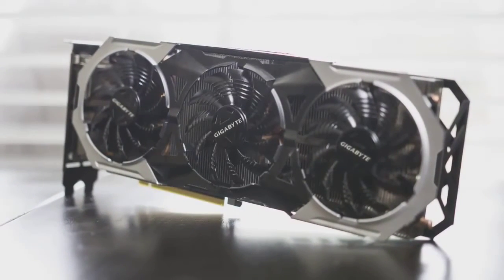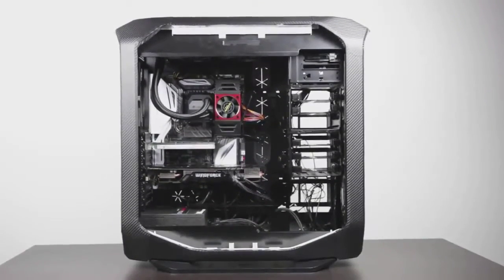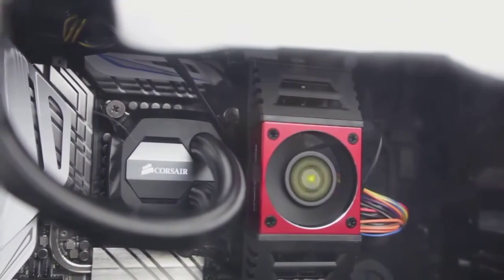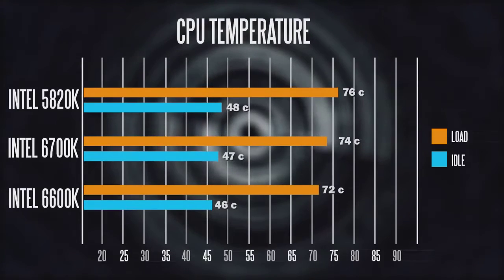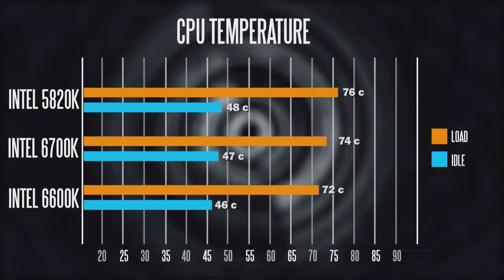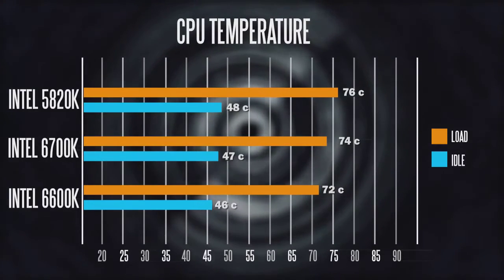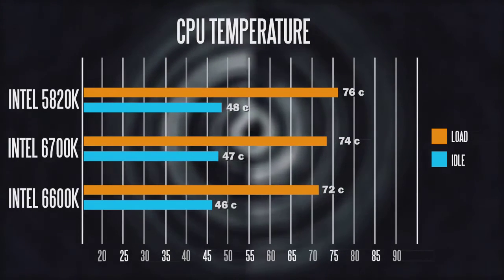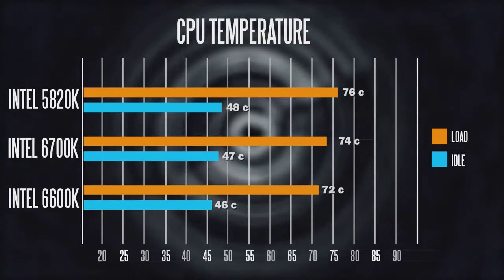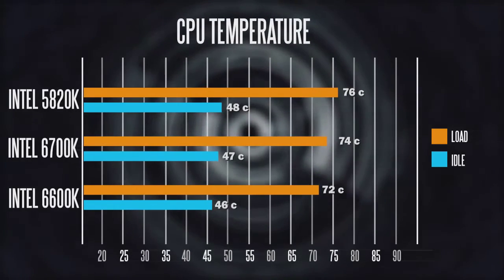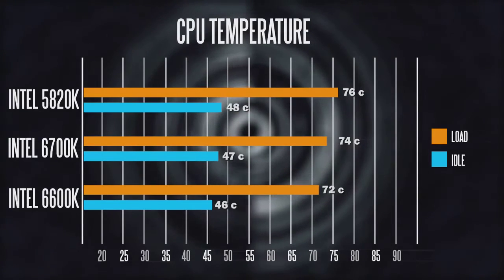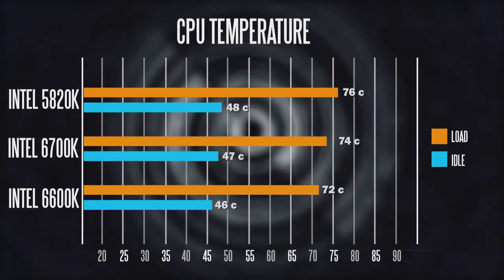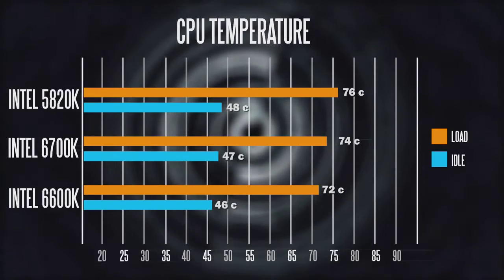Now let's talk about temperatures on all three CPUs, both at idle and under load. Keep in mind the idle temps are based on our overclock settings, so they'll run a little cooler at stock frequencies, but they're pretty safe at the overclock levels we've achieved. When running at 100% load using Prime95 for about 15 minutes, the 5820K hit about 76°C, the 6700K hit 74°C, and the 6600K hit about 72°C. The 6-core got the hottest, the 6700K is at a safe level, and we probably have a bit more headroom for overclocking on the 6600K. If overclocking is your priority, the Core i5 could be a real winner.